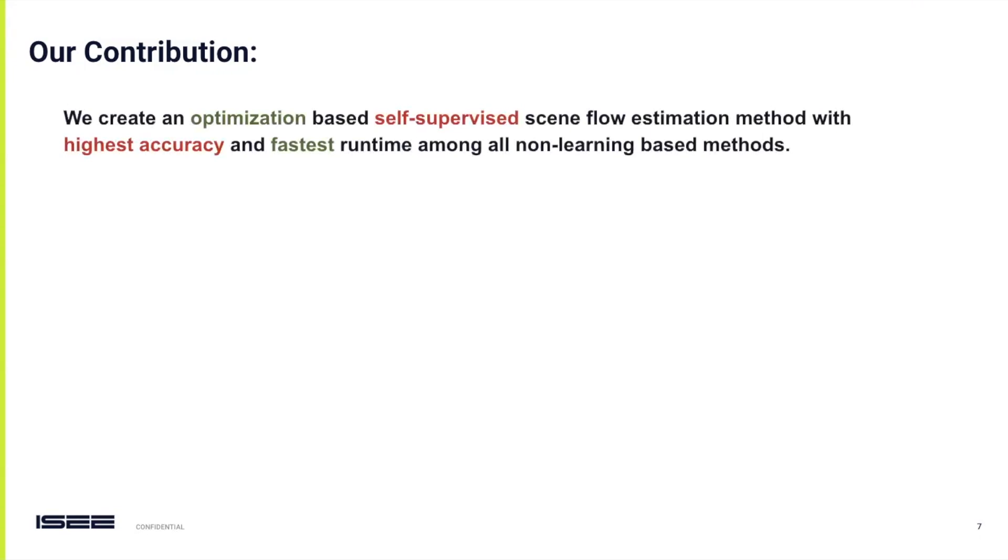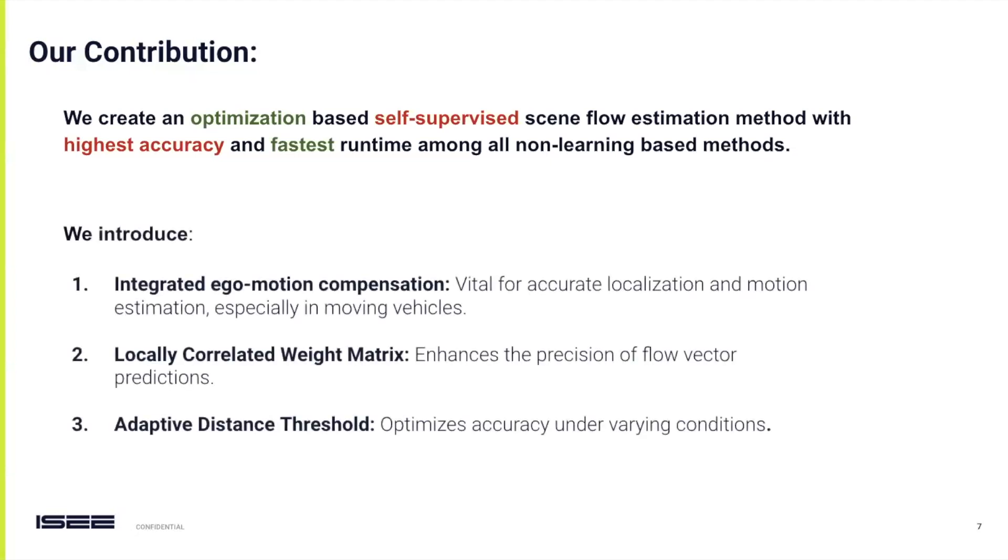This observation spurred us to develop an algorithm that not only excels in accuracy but also operates swiftly. In our research, we have crafted a self-supervised optimization-based scene flow estimation method that stands out as the fastest and most accurate among its non-learning counterparts. This breakthrough was achieved through key innovations such as integrated ego-motion compensation, a locally correlated weight matrix, and adaptive distance threshold.